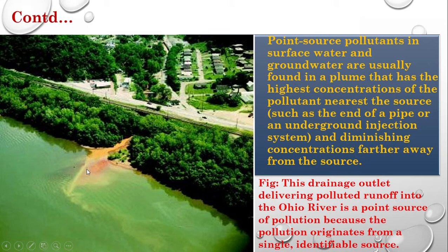In this figure you can see a pipe discharging pollutants into a river. This shape is known as a plume. It has higher concentration near the source — near the end of the pipe — and the concentration decreases as you move away from the source.